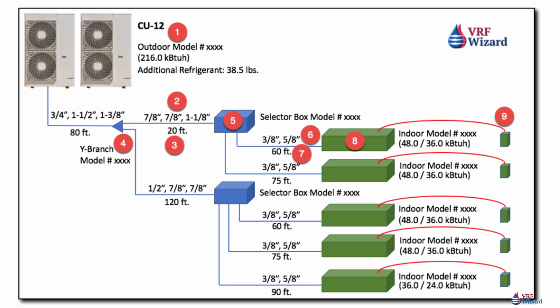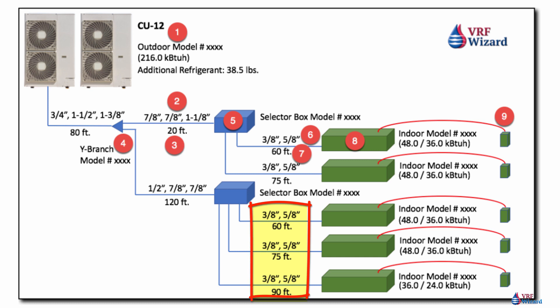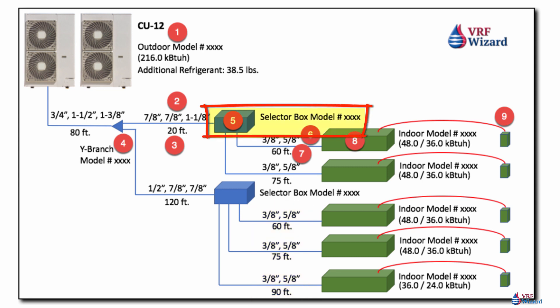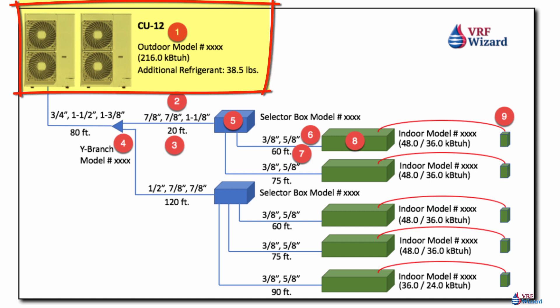The VRF design software will give you the following: indoor model numbers, thermostat or controller model numbers, pipe sizes — you input the length and it tells you what size you'll need. It will pick the branch selector box, which is for a heat recovery system. If you just have a heat pump, you won't have those. It will also give you the pipe size going to the outdoor units, and once you've selected all your indoor units, it will select the outdoor unit or give you options from various outdoor units.